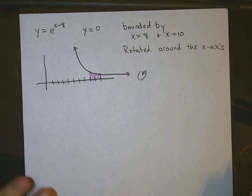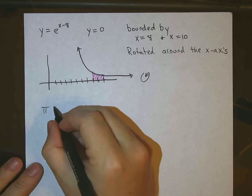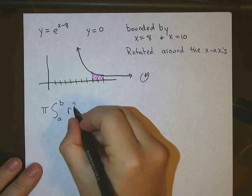Okay, so our formula for this is going to be, in general, pi times the integral from a to b, r squared dx.